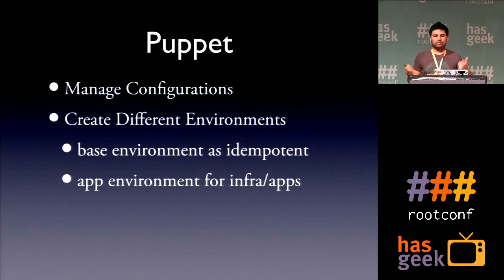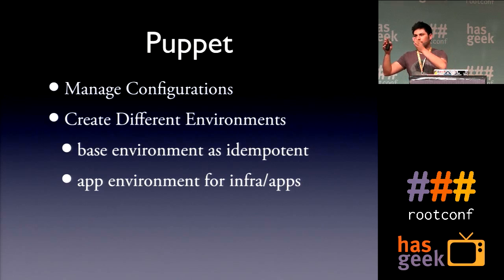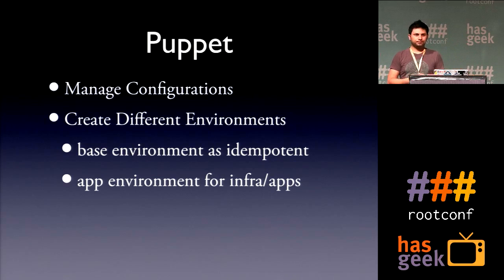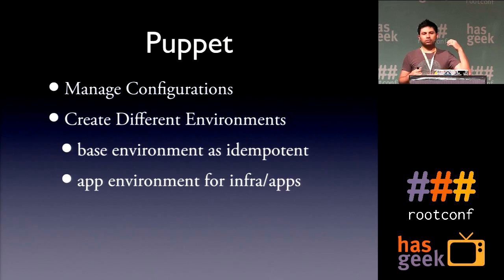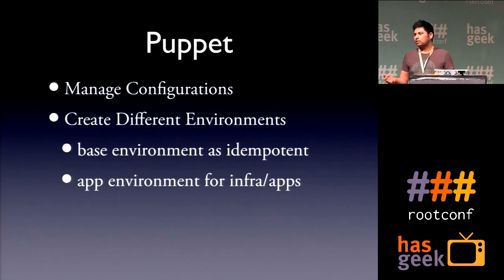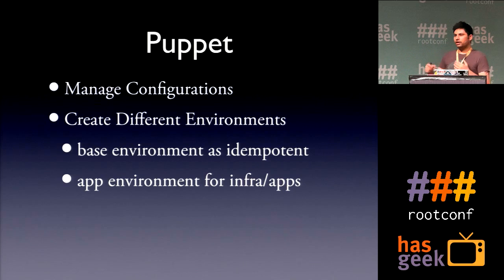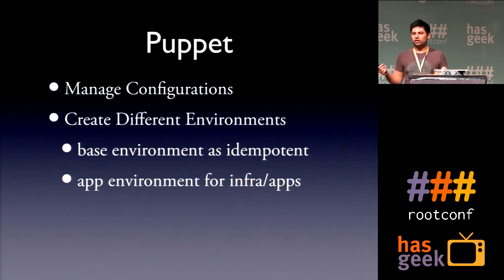Puppet is an infrastructure and configuration management tool. What you do with Puppet is define all your machines as nodes, then define classes which say what is the purpose of this host and what all should go into this box. We segregate things into two environments. One is a base environment — how to do networking, what default packages will come, what sudo privileges there are, what user limits are, and basic stuff every machine should know about itself. This goes inside the base environment and is idempotent, meaning an agent runs on each machine and updates itself automatically. If you make any base change, it reflects on all machines automatically.